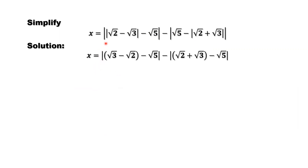So simplify. Look at the first one. Inside part of the absolute value sign — how to drop the inside part? Check it. Inside part: square root of 2 minus square root of 3. We know square root of 3 is bigger than square root of 2, so inside part is negative. If we want to drop the absolute value sign, we should put the negative sign in front. So negative square root of 2 is here, and negative negative square root of 3 should be positive square root of 3.